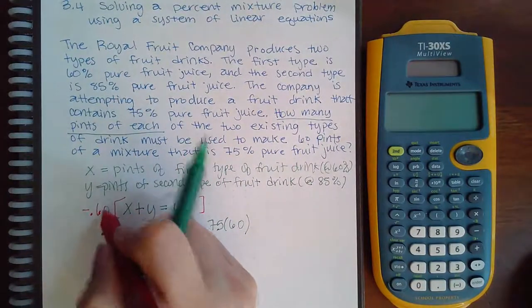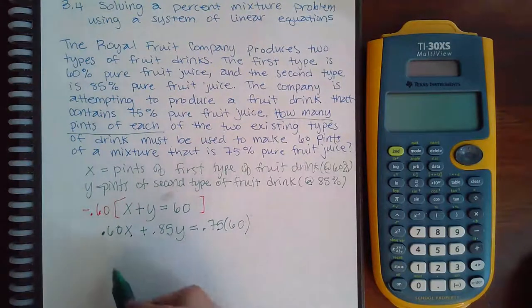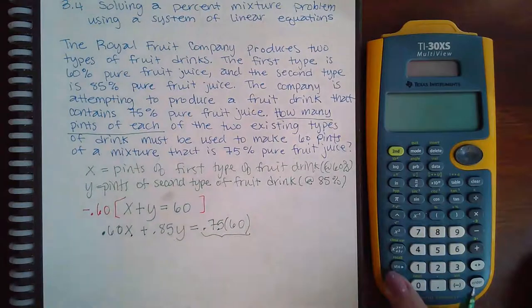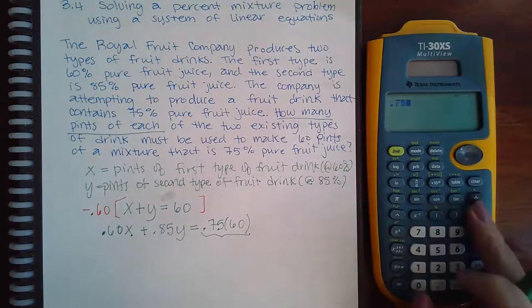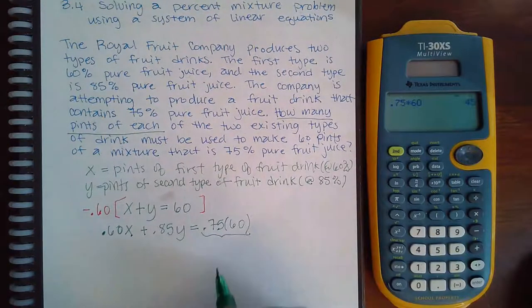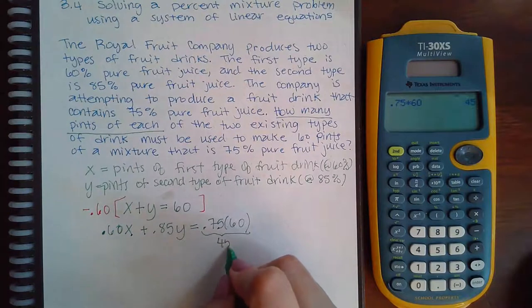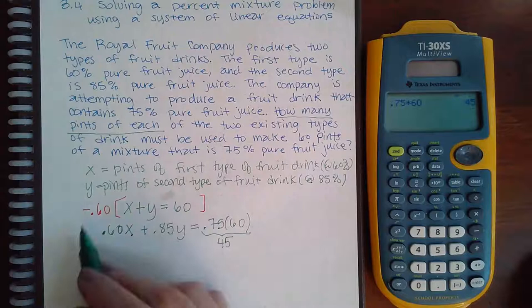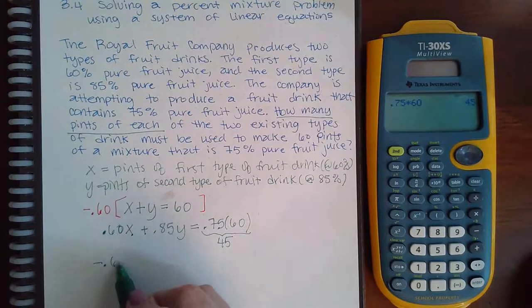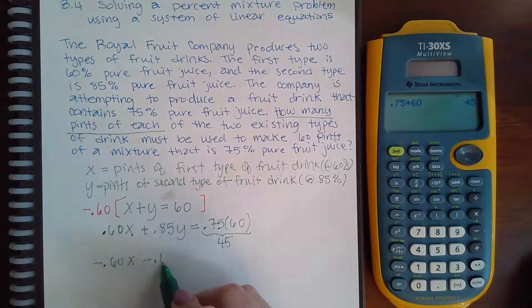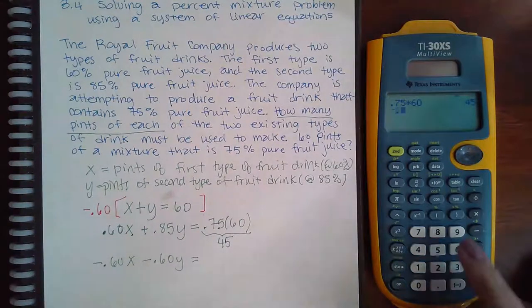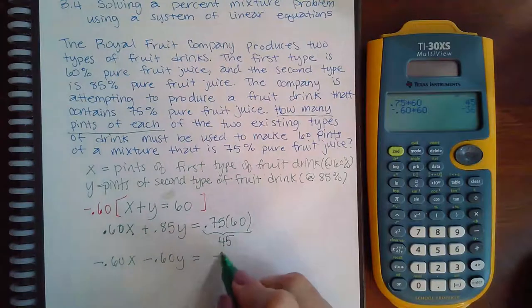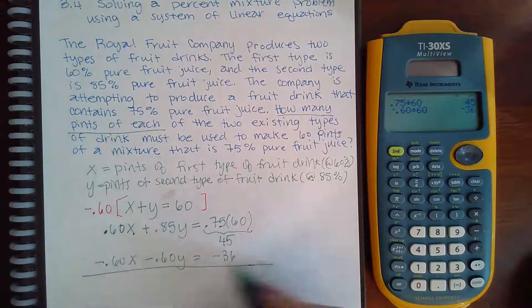Let me first multiply this number out so 0.75 times 60 is 45, so I know that that's just 45 in disguise. Let's multiply this, we get negative 0.60x, negative 0.60y, and negative 0.60 times 60 will equal negative 36. So when I combine the two, these are going to cancel.